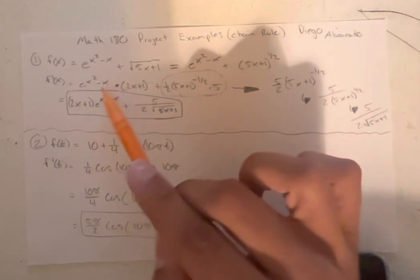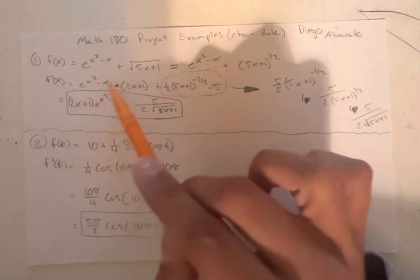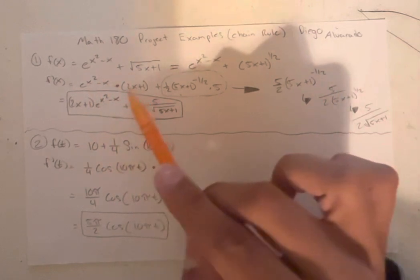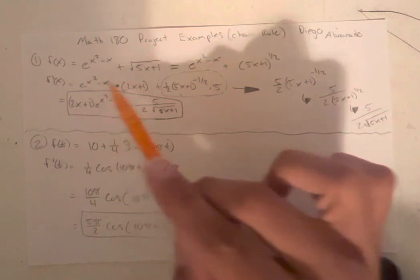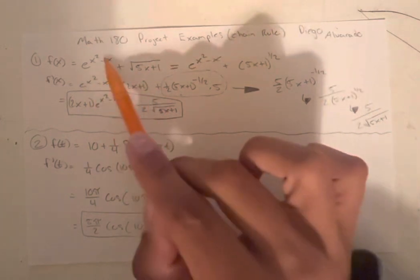Which is chain rule. So we get e to the x squared minus x times 2x minus 1, since this is the derivative of this inside function. So there goes the derivative of this.